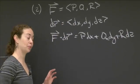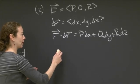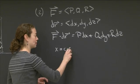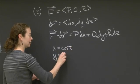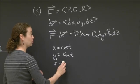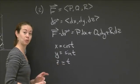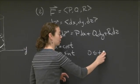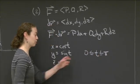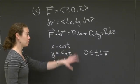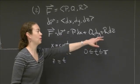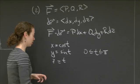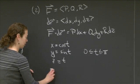Let me remind ourselves: x in this situation is cost, y is sint, and z equals t, based on how we're parameterizing the curve. We're interested in t going from 0 to π. These are the quantities we're going to need. To solve this problem, I need dx, dy, dz, and I also need P, Q, and R in terms of these x, y, and z values.